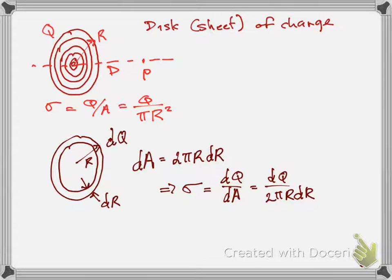To review from where we left off last class, we're finding the electric field at a distance d above a disk or sheet of charge. In this case we're using a disk of radius R and we're going to be above its center by distance d. That's the picture we had at the top from last class. We're going to break that disk into rings because we know the electric field of a ring at a distance d from its center, which we'll write down again soon.